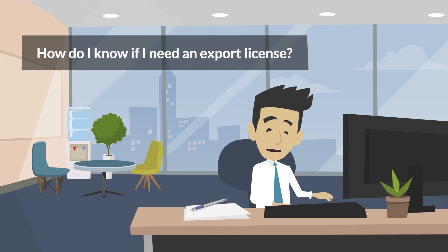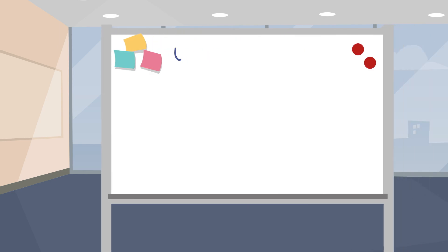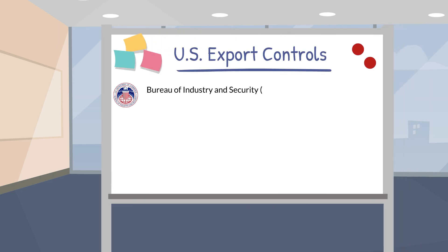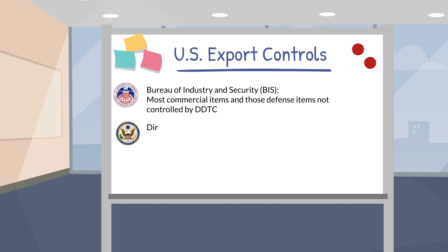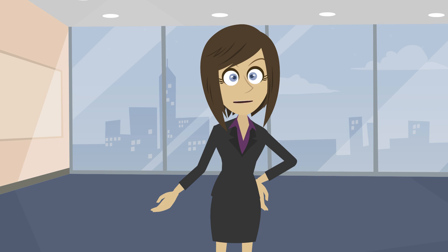How do I know if I need an export license? Before determining your export license requirements, it's important to know which agency has jurisdiction over your export. BIS has jurisdiction over the vast majority of commercial items and some military items. The Directorate of Defense Trade Controls has jurisdiction over sensitive defense articles and all defense services. The Office of Foreign Assets Control has jurisdiction over economic and trade sanctions. This video is intended to help you understand what you need to know about items subject to the Bureau of Industry and Security's jurisdiction.